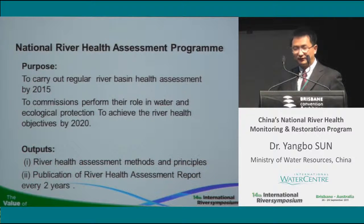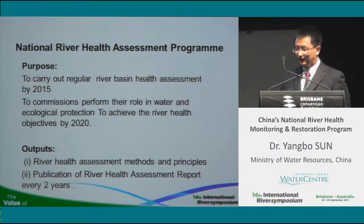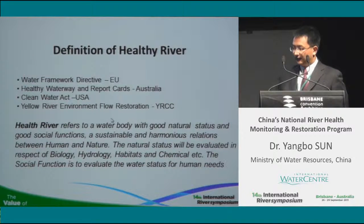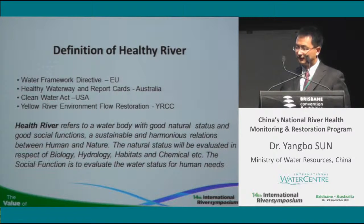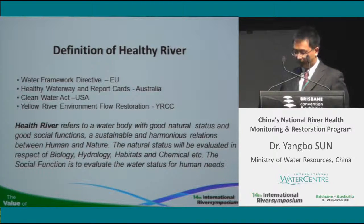This is the national program for river health assessment — a five-year program with the target of carrying out regular river basin health assessments by 2015, and reaching river health objectives by 2020. The major outputs are: first, building a national river health assessment method and principles; and second, producing and publishing a river health assessment report every two years. The definition of a healthy river in China is similar to other places in the world, with two components: the environmental part and the social part, balancing human needs and environmental needs.